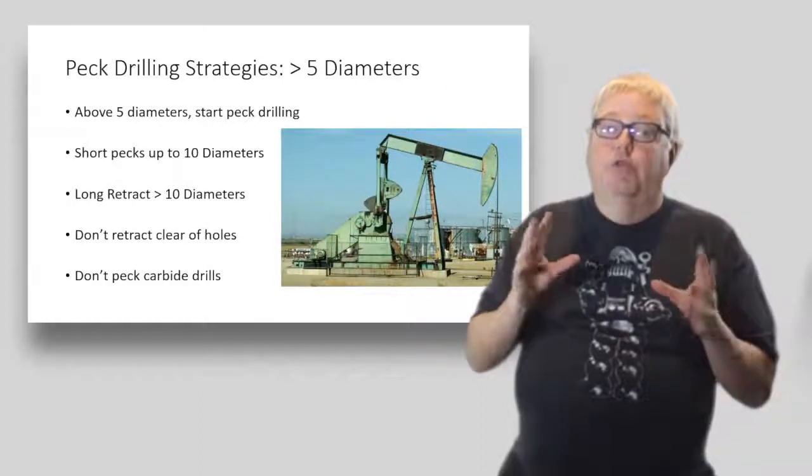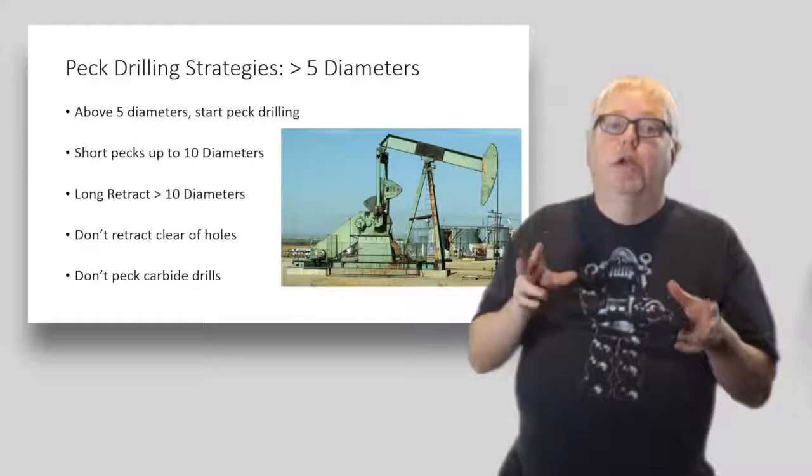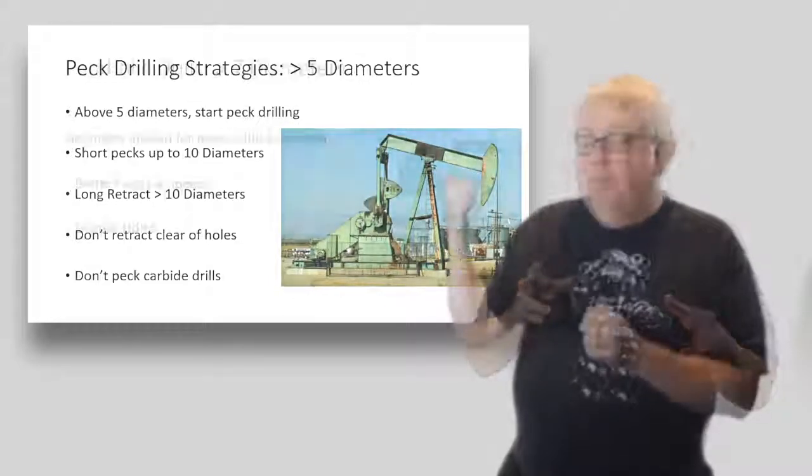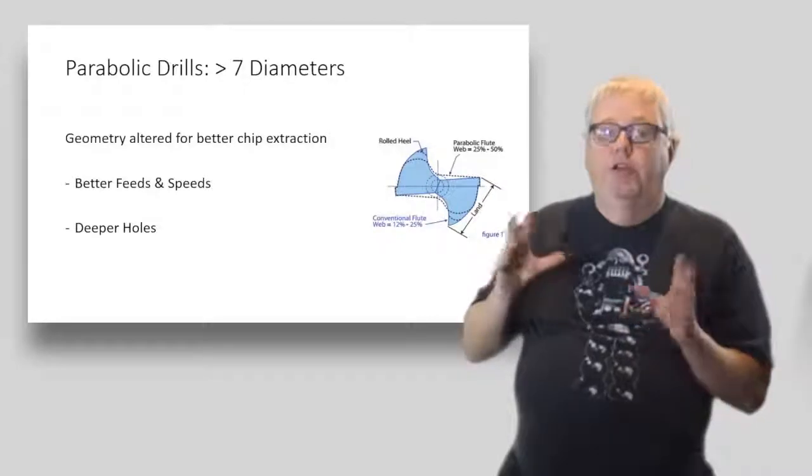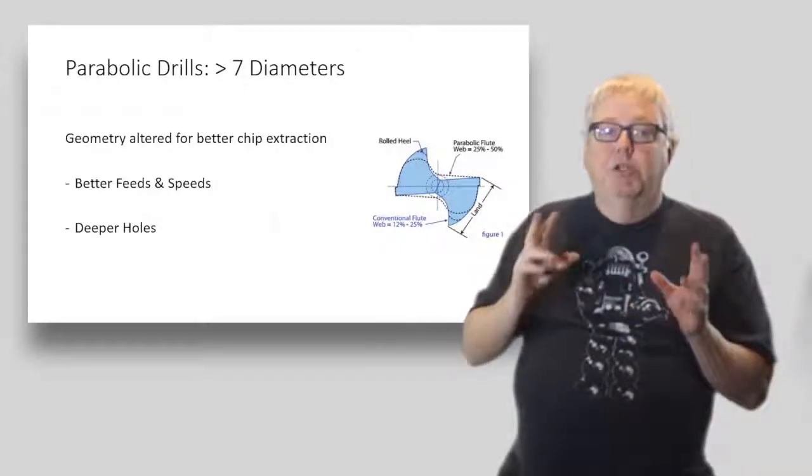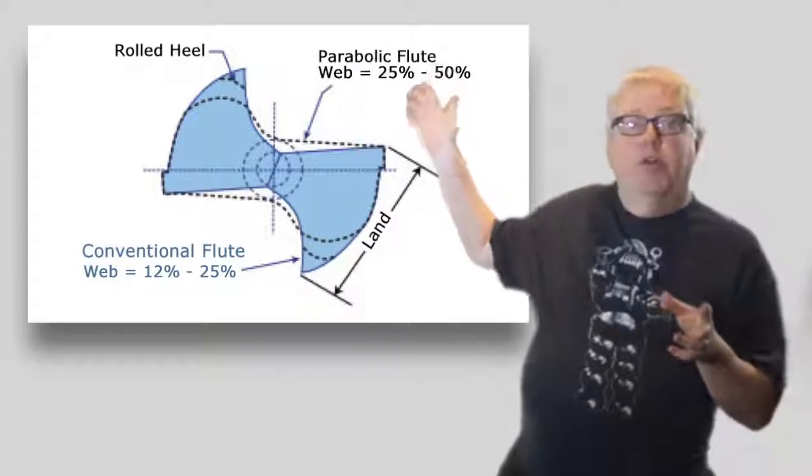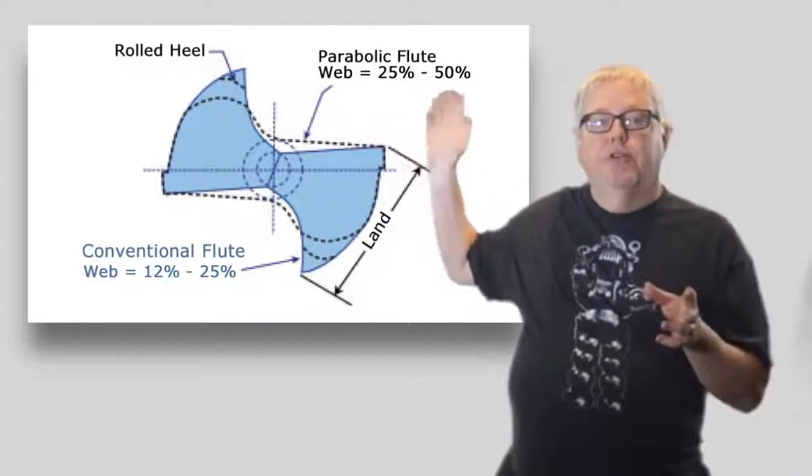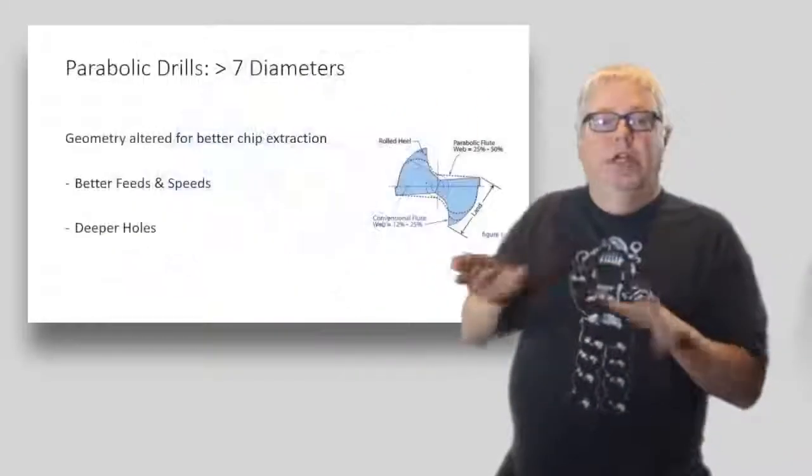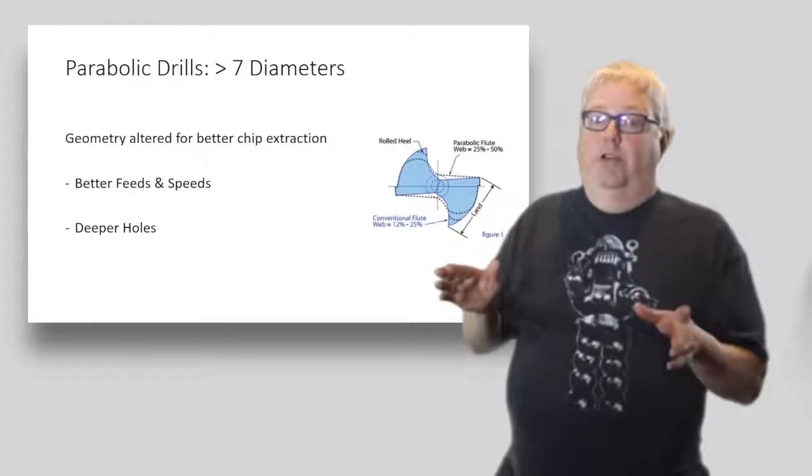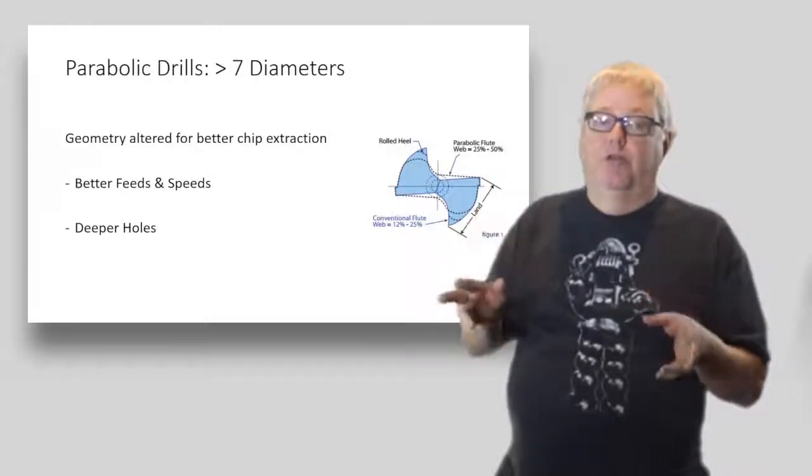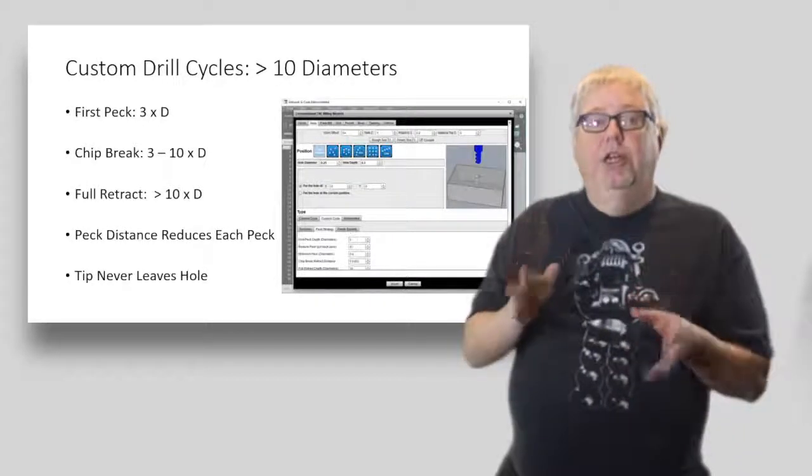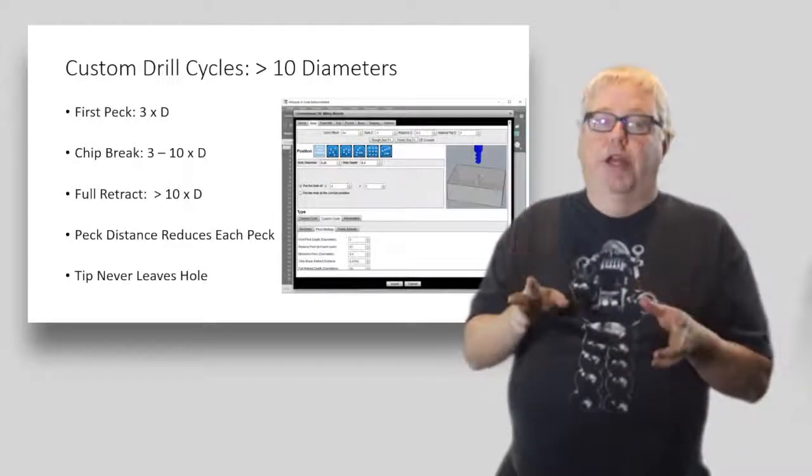Carbide is brittle and you can chip the tool, so if you're using carbide you may have to skip the peck cycle. Check with your tool manufacturer to see what their recommendation is about pecking. Parabolic drills: once you get to seven diameters, you want to use a parabolic flute drill. They have a special geometry like what I've shown here to help optimize their chip extraction.